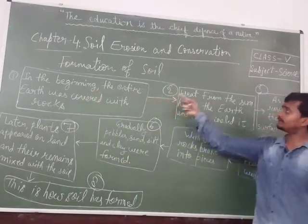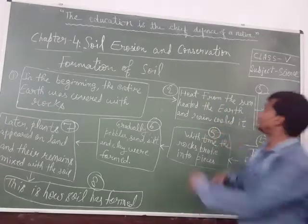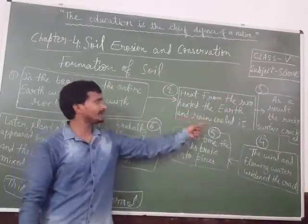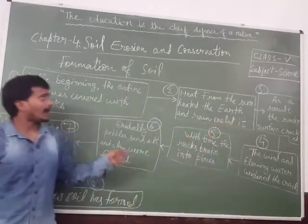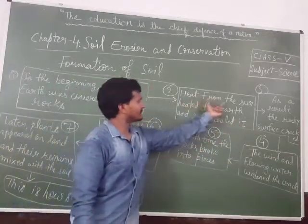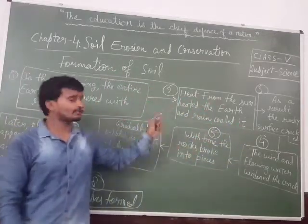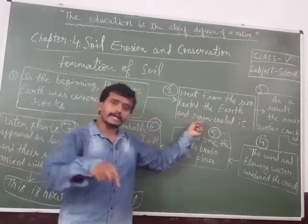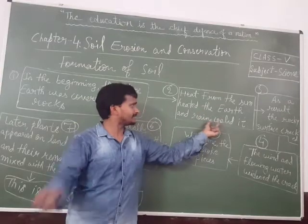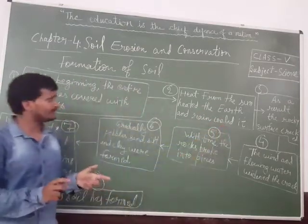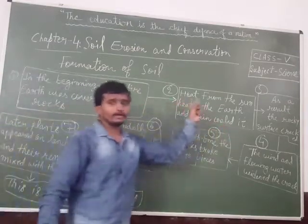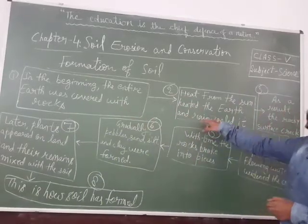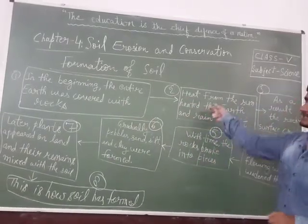After that, heat from the sun heated the earth and rain cooled it. Due to the rain, there is also a process of pulling. So two processes are here: heat from the sun heated the earth and rain cooled it.